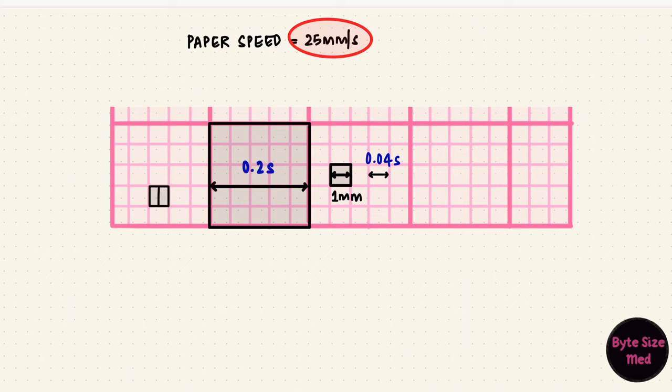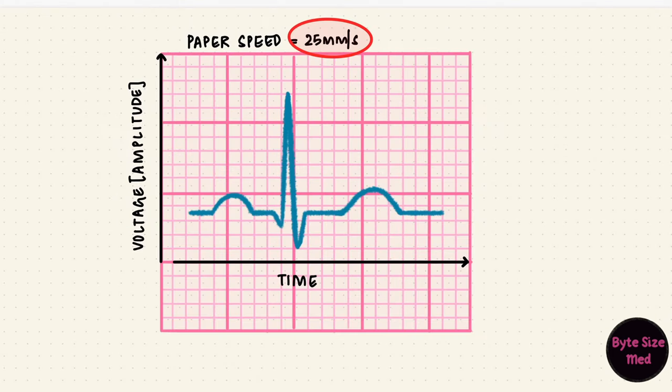Vertically, every millimeter is 0.1 millivolts. Which means every 10 small boxes or two large boxes is 1 millivolt. So if we assume a wave looks like this and it's now two and a half small boxes multiplied by 0.04 would give us a duration of 0.1 seconds. So that's the duration of this wave. So using these boxes, the durations of the waves, segments, intervals, and the amplitudes can be calculated.